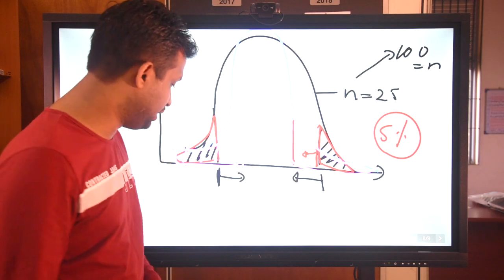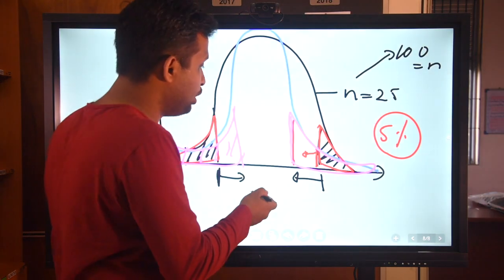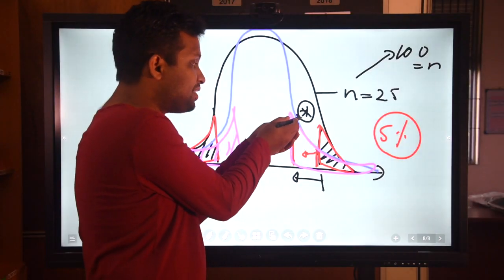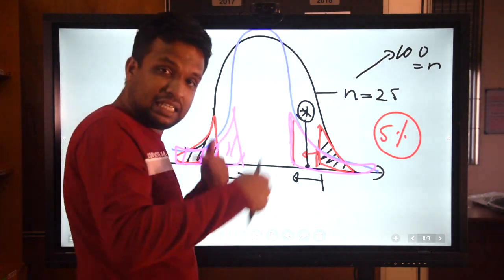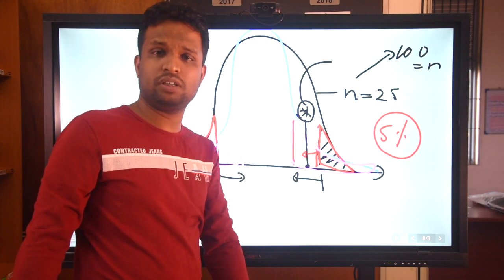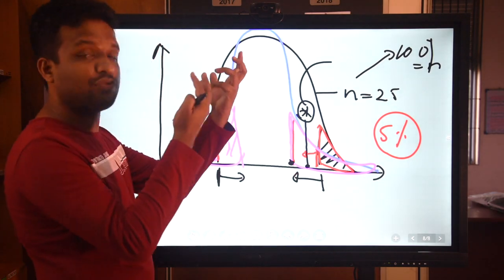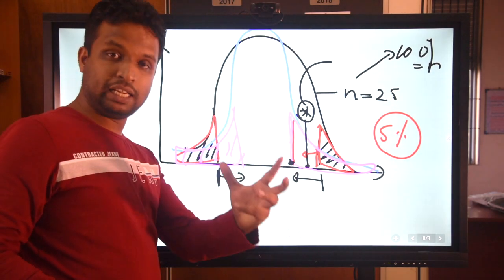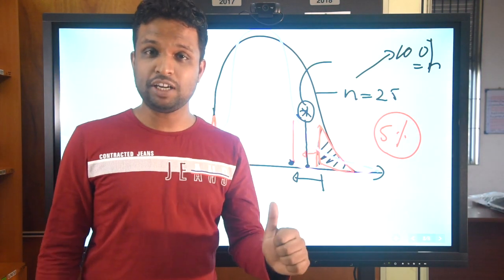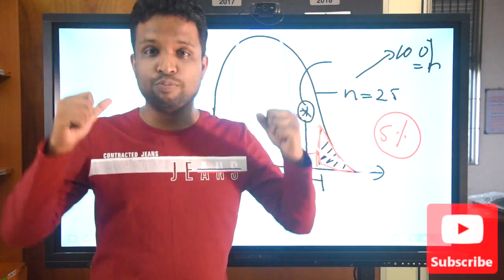So what is Type 2 error? Type 2 error is classifying a sample mean within the null region when it is actually significant. If the sample mean from the testing population falls in the initial null region, the decision would be that the null hypothesis is not rejected — even if it is actually different. But when we increase the sample size, the rejection region shifts, and now the conclusion becomes that the null hypothesis is rejected. So you can minimize Type 2 error by increasing the sample size. Keep in mind: for Type 1 error, you change the rejection region; for Type 2 error, you increase the sample size.